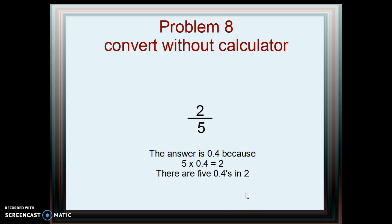Two divided by 5: the answer is 0.4 because 5 times 0.4 equals 2. There are five 0.4's in 2.